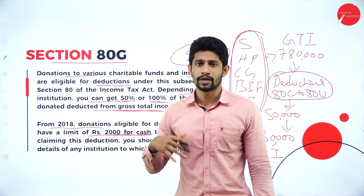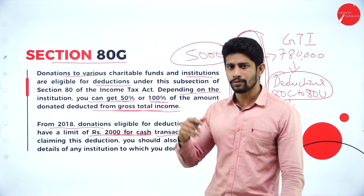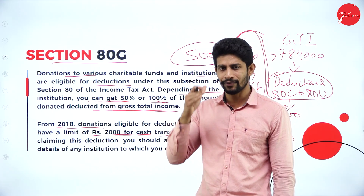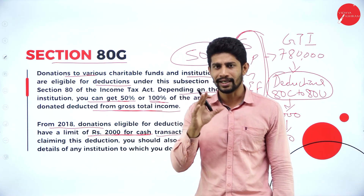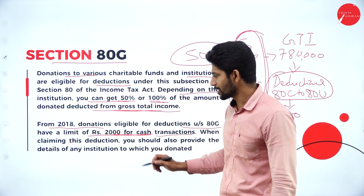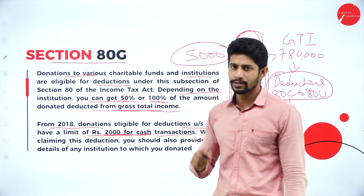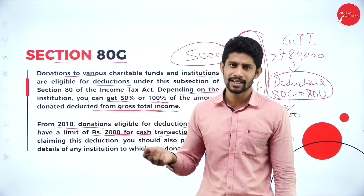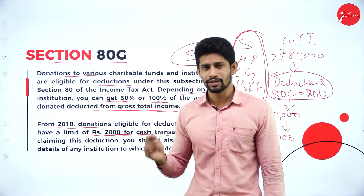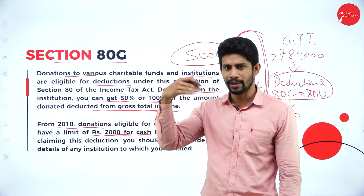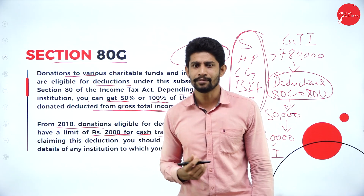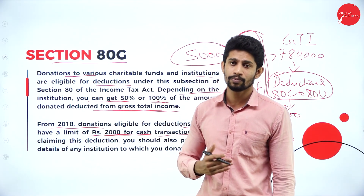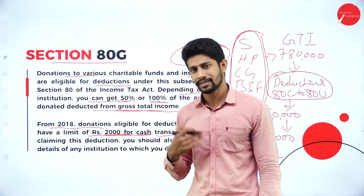Some people give 2,000 in cash but show it as 20,000 donation — that is why if you are giving a donation in cash, you can take the deduction of a maximum of 2,000 rupees. If you are paying through online, NEFT transaction, or cheque, you can pay as much as you want. If you pay 10,000 rupees, you can claim 10,000 as deduction; if you pay 20,000 rupees, you can claim 20,000.